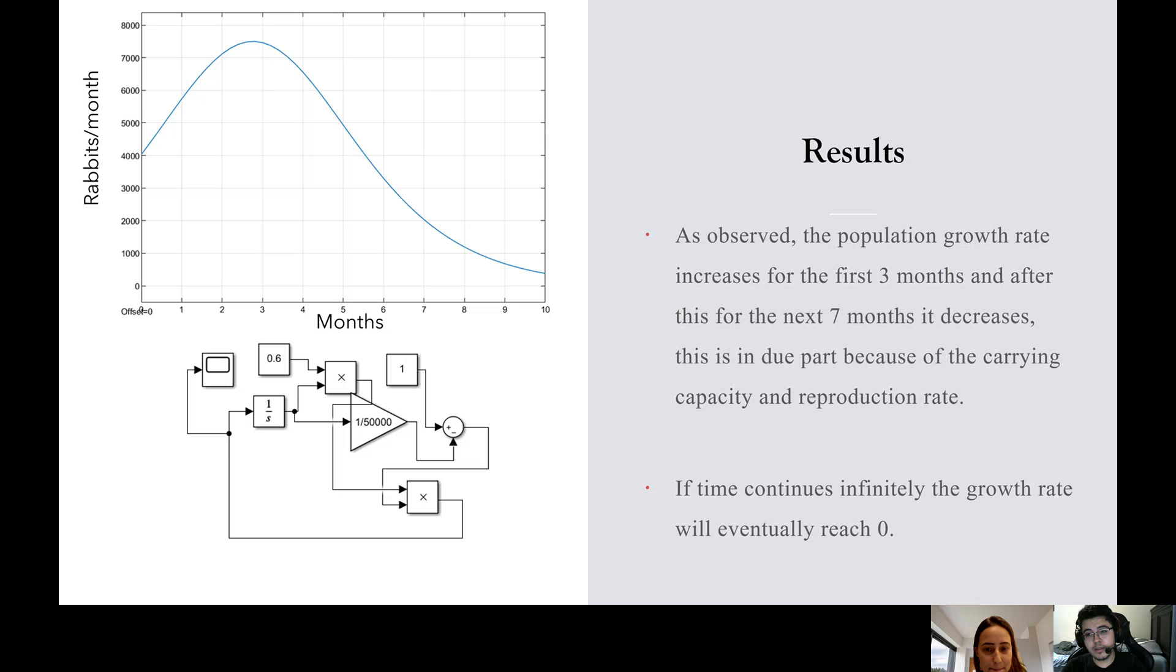For our results, as you can see, in the first three months that the rabbits are in the said location, their population growth is increasing. But then after seven months the rate actually decreases, and this is because of the carrying capacity and reproduction rate. The reproduction rate is actually fairly huge, so in the first three months it's quickly increasing, and then because it's about to reach the carrying capacity, it has to start lowering the value of the population growth. In actuality, according to this differential equation that we use, if time was to pass infinitely the value would eventually reach zero because at that point it would have reached the carrying capacity that we set.